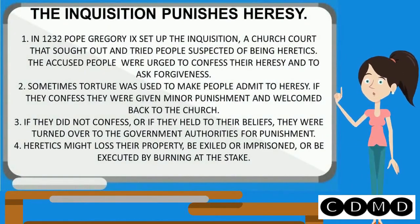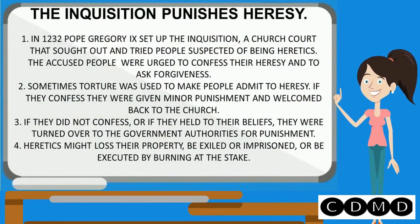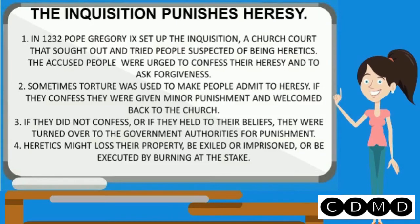The Inquisition Punishes Heresy. In 1232, Pope Gregory IX set up the Inquisition, a church court that sought out and tried people suspected of being heretics. The accused were urged to confess their heresy and ask forgiveness. Sometimes torture was used to make people admit to heresy. If they confessed, they were given minor punishment and welcomed back to the church. If they did not confess or held to their beliefs, they were turned over to government authorities for punishment. Heretics might lose their property, be exiled or imprisoned, or be executed by burning at the stake.